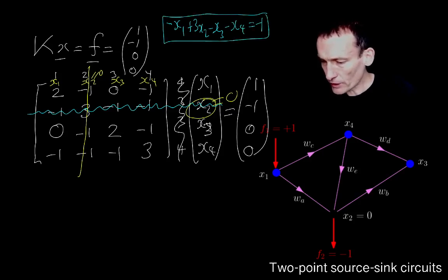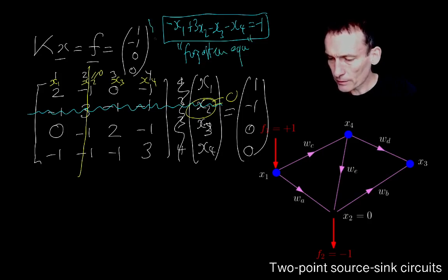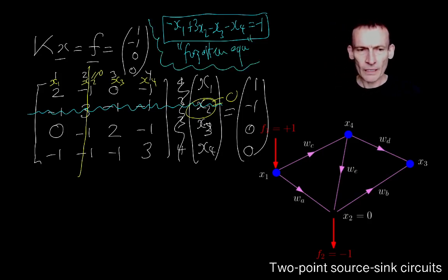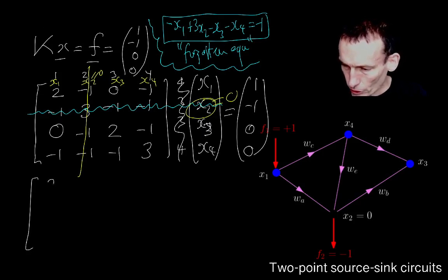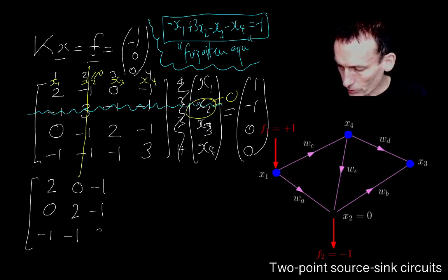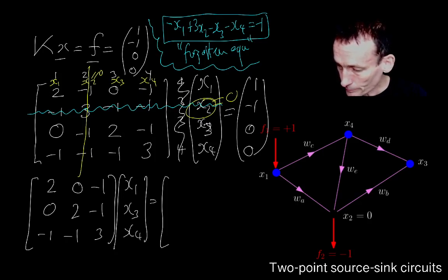I'm just going to keep it up there. What am I left with if I've forgotten that equation? I'm left with 2, 0 minus 1, 0, 2, minus 1, minus 1, minus 1, 3, times X1, X3, X4 is equal to 1, 0, 0.